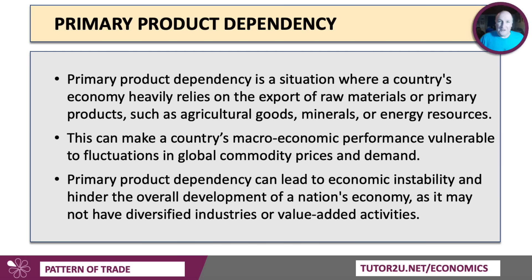Primary product dependency is another feature of patterns of trade. This is where a country relies heavily for its exports on extracting, maybe processing, and then exporting raw materials — primary products such as farm goods, energy, copper, zinc, and so forth. Countries with very high primary product dependency, or PPD, often find their macroeconomy, growth, exports, and fiscal position quite susceptible to fluctuations and volatility in world commodity prices and world demand. If you're exporting lithium or copper, for example, you are quite exposed to the world price, which can lead to macroeconomic instability and hamper development.